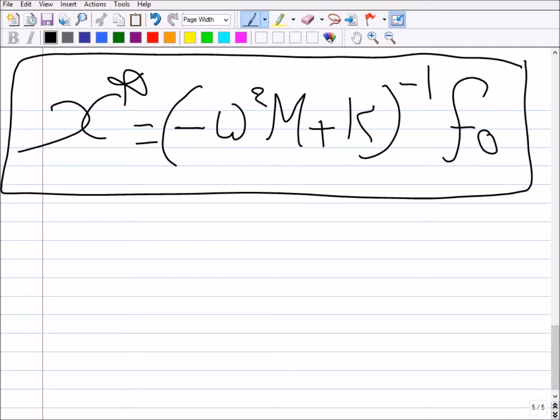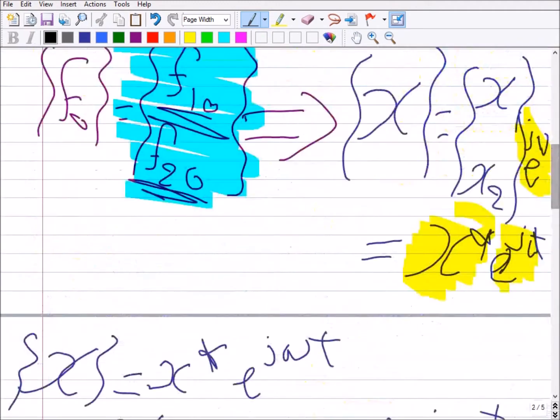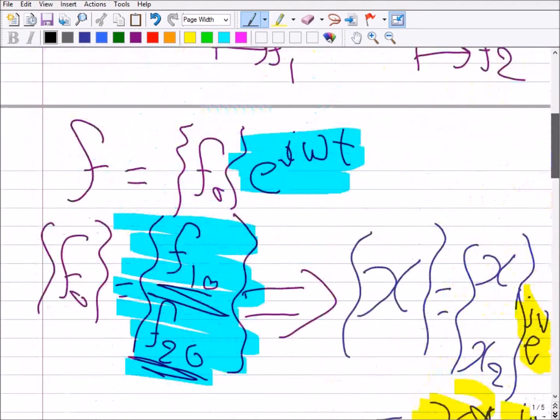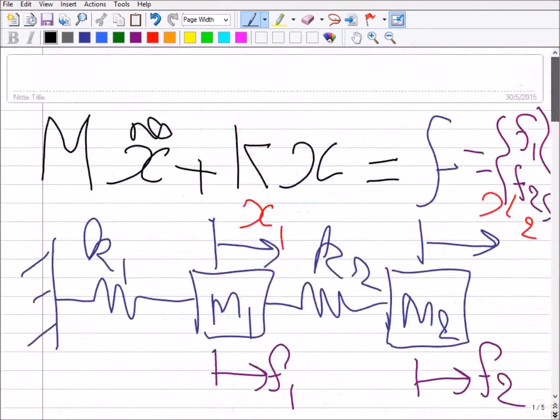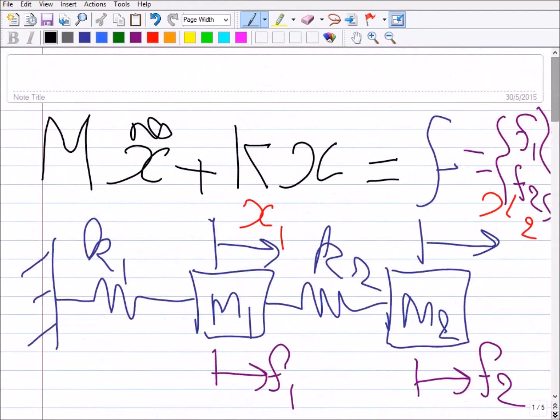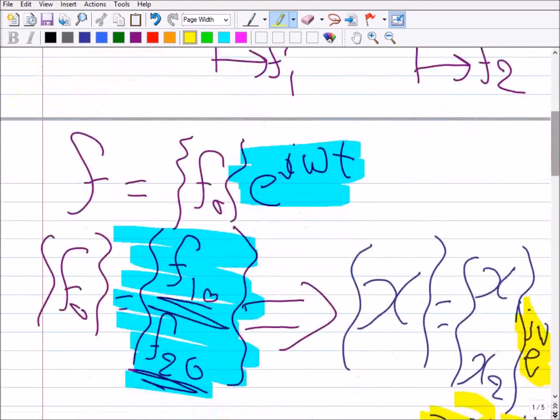Remember, we started here with a differential equation. Where is the equation that we wrote here? We started with a differential equation, okay, in which you have an excitation vector in time on the right-hand side and the system degrees of freedom on the left-hand side.